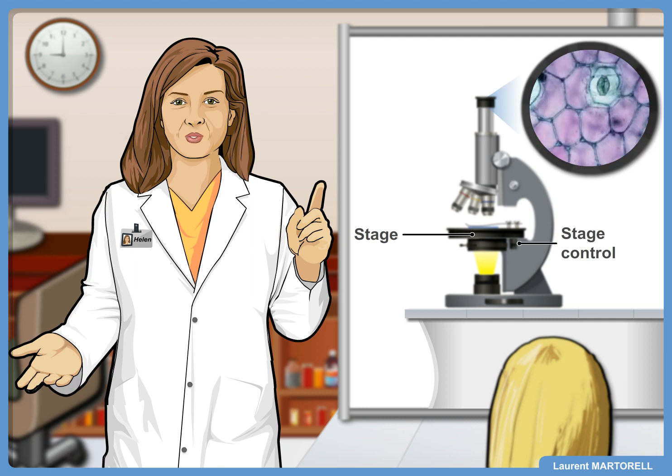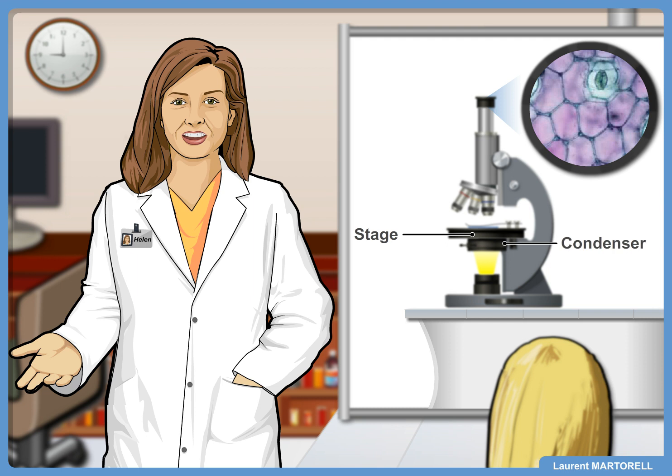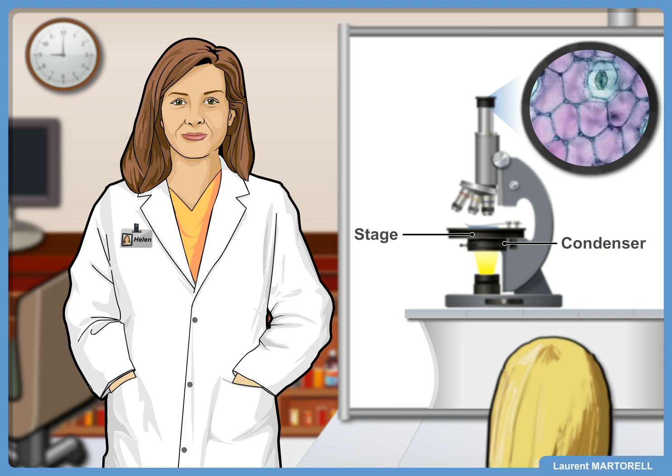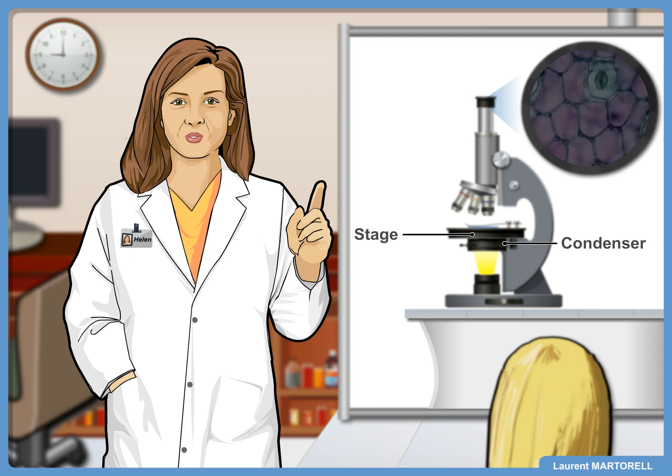You may also have noticed another part below the stage. This is the condenser. It concentrates the light on the specimen. You can also adjust the diaphragm to get more or less light.